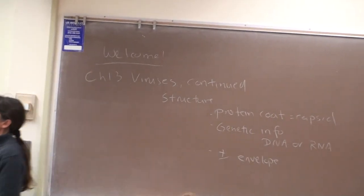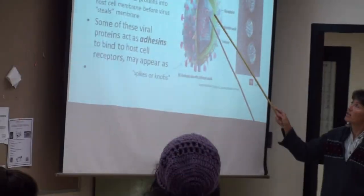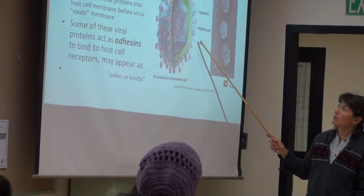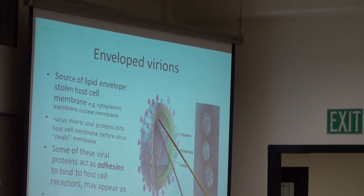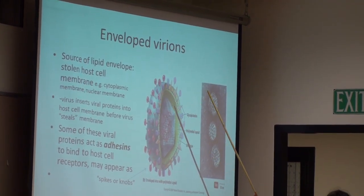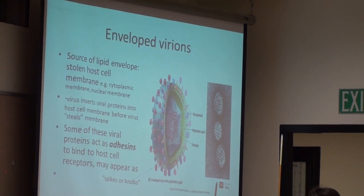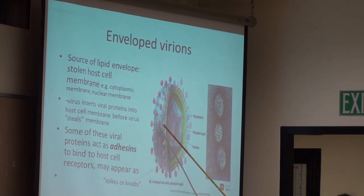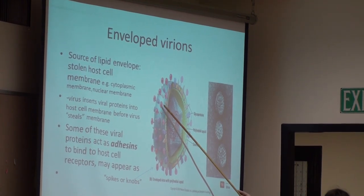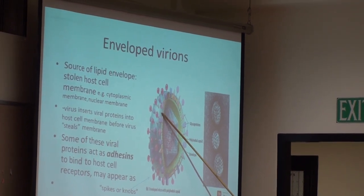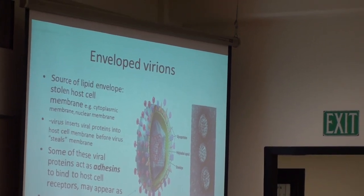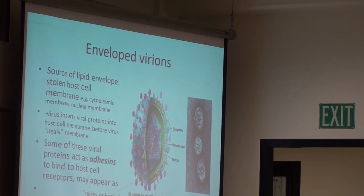Here is a picture of an enveloped virus. Here's the protein coat or capsid, and inside is the genetic information. The outer layer is stolen host cell membrane — the viral envelope. The virus must modify that stolen membrane before they take it by inserting some of their viral proteins, often called glycoproteins, which hold sugar or carbohydrate groups attached. One of the most important functions of these viral proteins is that the virus must have adhesins in the outermost layer. Adhesins are molecules that bind to complementary molecules on the surface of host cells, essential for the first step of viral infection: attachment to host cells.